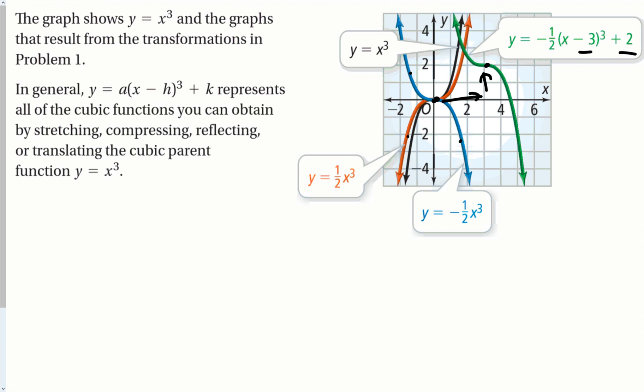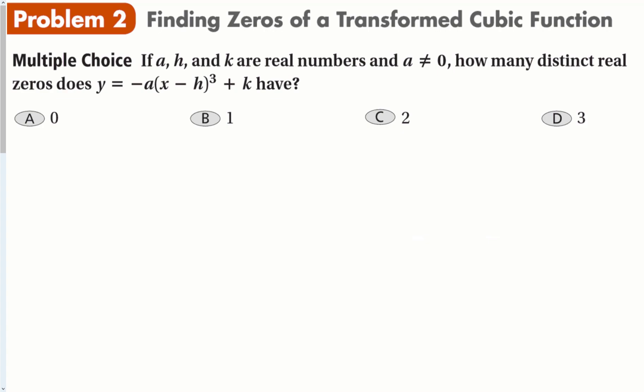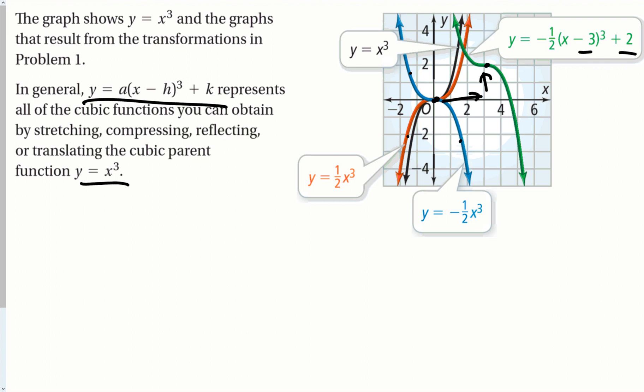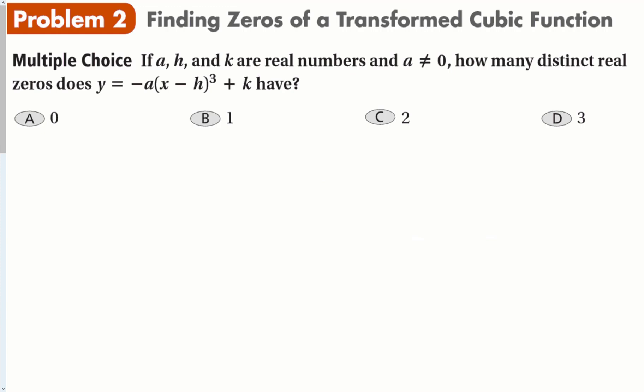In general, the function y equals a times (x minus h) to the 3rd plus k represents all cubic functions obtainable by stretching, compressing, reflecting, and translating the cubic parent function. If you have an equation in this form, you could have started from the parent and moved it any which way. Notice that the parent cubic function only crosses the x-axis once, and all these transformations — the red, blue, and green ones — also only cross it once, even though it's 3rd power and has 3 solutions. Two of them may be imaginary.